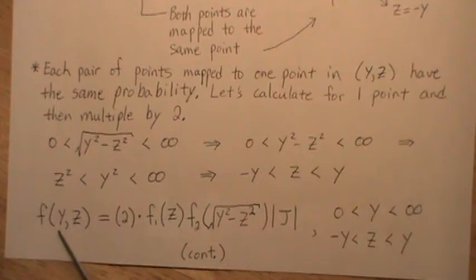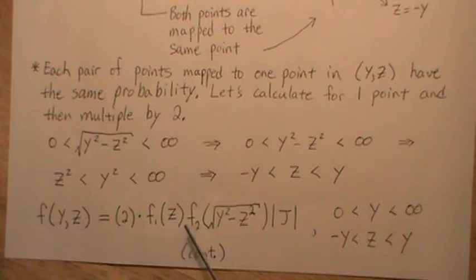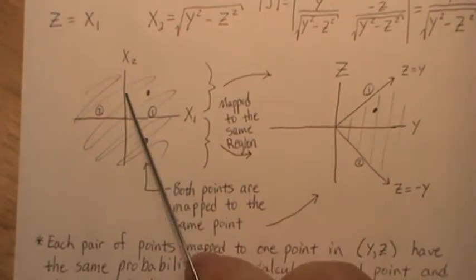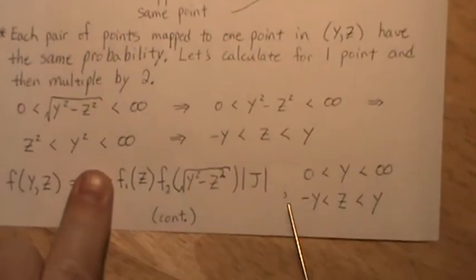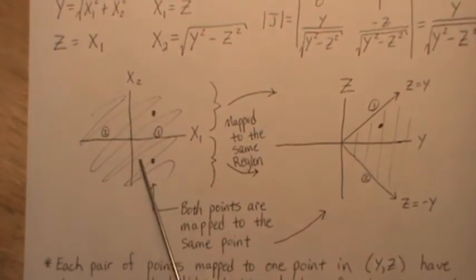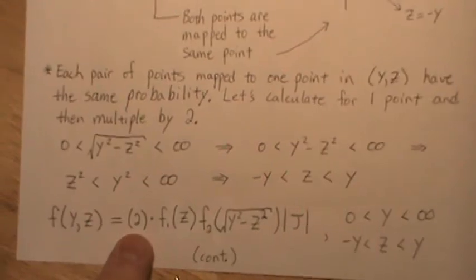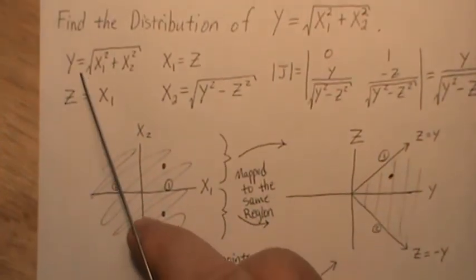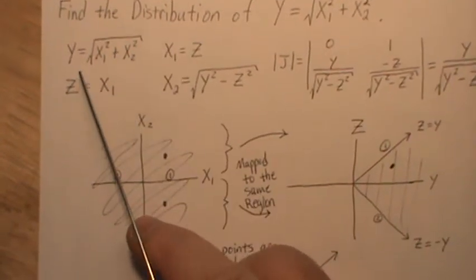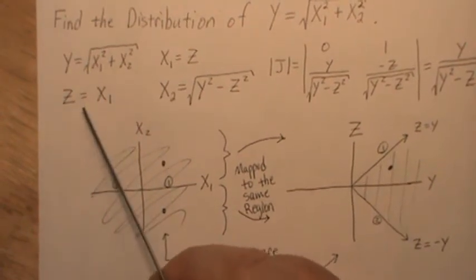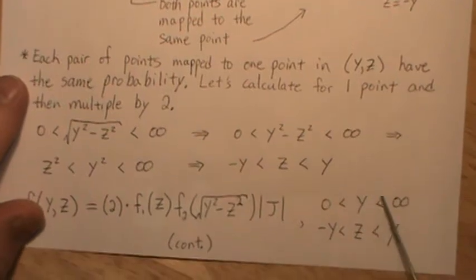So now the joint distribution of F of Y, Z is this. Remember, it would have been this, which is this region, this region up here, plus this region. But everything here is identical to here. So I just put a 2 out front. Y goes from zero to infinity. That's right. This is zero to infinity. And that's what I mean by make this one general, then put conditions on this so you can integrate it. And so that's what we do here.